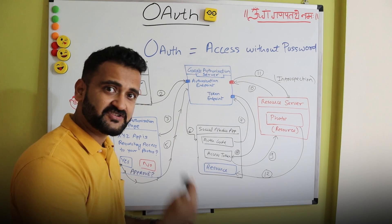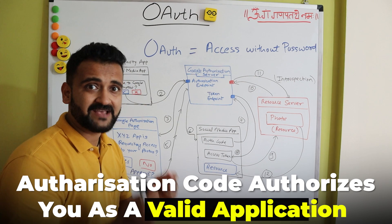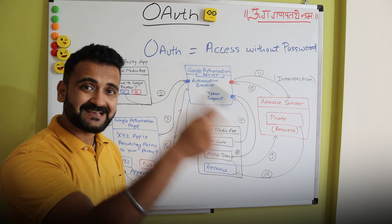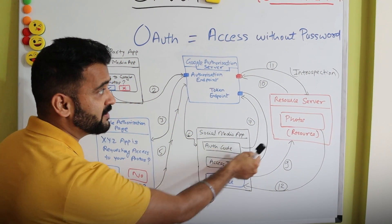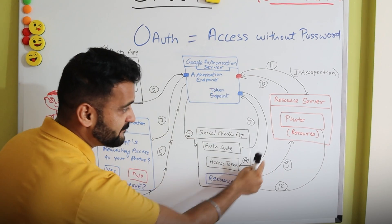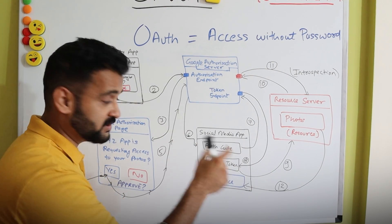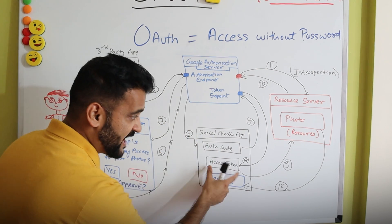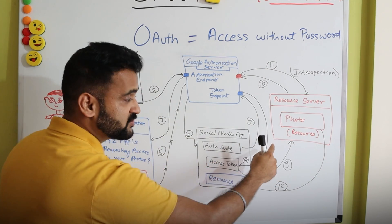The moment the authorization code is given, this particular application goes back to the authorization server to get an access token. There is a difference between an authorization code and an access token. The authorization code authorizes you as a valid application, but without an access token you won't be able to actually access the real resource. At step seven, the social media app sends this authorization code back to the token endpoint, and at step eight the token endpoint provides the actual access token.